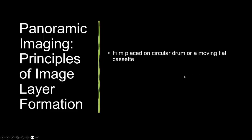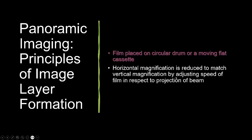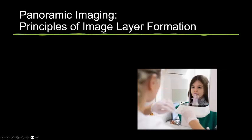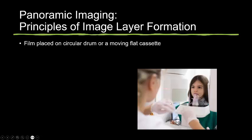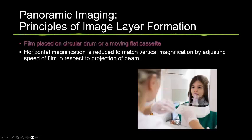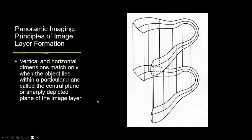For layer formation, the film is placed on a circular drum or a moving flat cassette. Horizontal magnification is reduced to match vertical magnification by adjusting the speed of the film relative to the projection of the beam. Vertical and horizontal dimensions match only when the object lies within a particular plane — the central plane or sharply depicted plane of the image layer, known as the focal trough.